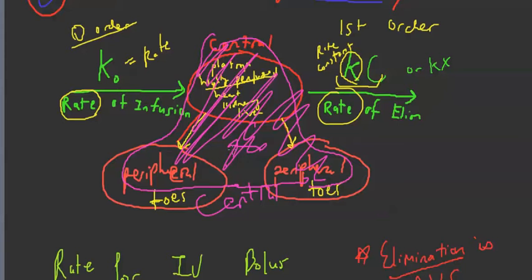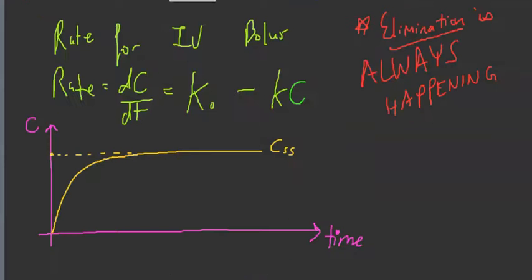We're assuming that everything gets distributed — even to our toes. Our assumption is that the drug goes there right away, distribution happens instantaneously to every part of the body. Only then can we call our whole body a one-compartment model. So the rate of entry is K₀ (zero order) and exit is first order, so the overall rate is going to be a subtraction — entry minus exit.